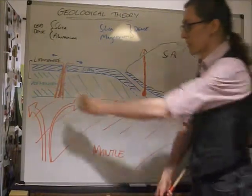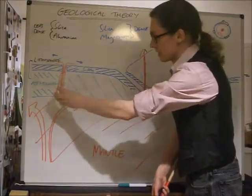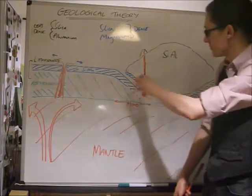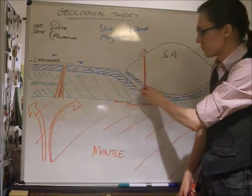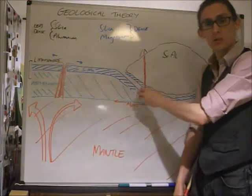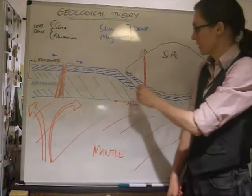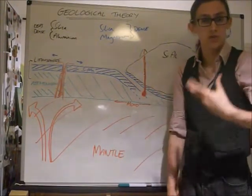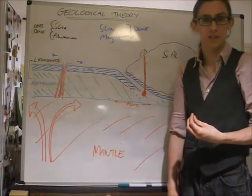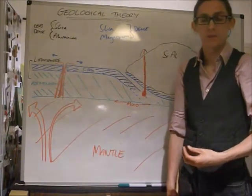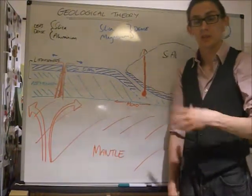So you've got very hot, very runny, basaltic magma over here. You've got much thicker, cooler, high silica content magma here. This tends to be more like some rhyolitic or andesitic type magma. I'll come back to these terms a little bit later.